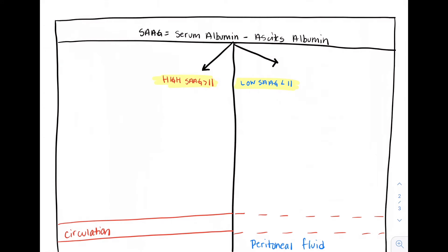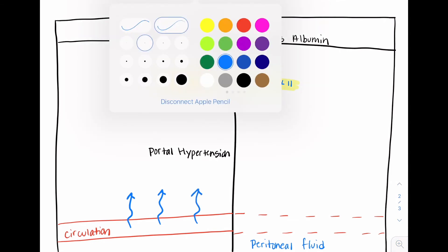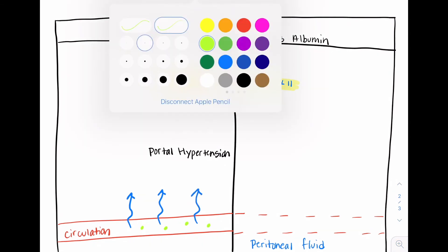In the setting of portal hypertension, there is increased hydrostatic pressure, leading to a leakage of fluid. However, albumin is too large to pass through the capillary membrane, and therefore, the difference between the albumin in the ascitic fluid and the albumin in the serum is increased. And this is how patients with portal hypertension get ascites.